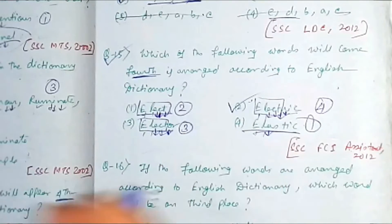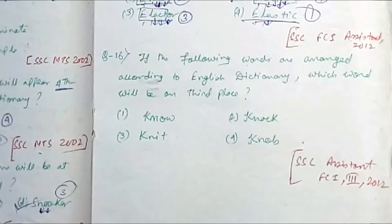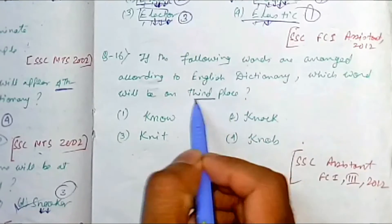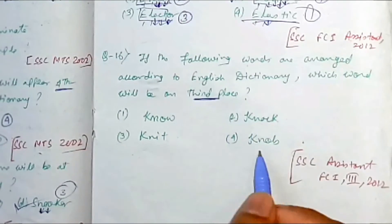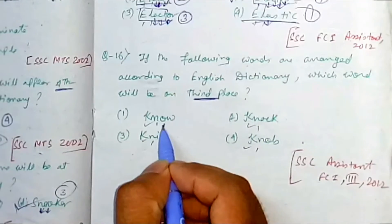If you have any problem, please pause this video or rewind and watch it again so you can understand better. Now let's move forward to question number 16. The question states: if the following words are arranged according to the English dictionary, which word will be in third place? The words are: no, not, knit, and nulls. This came in SSC Assistant FCI 2012. Please pause this video first and try to do it yourself.